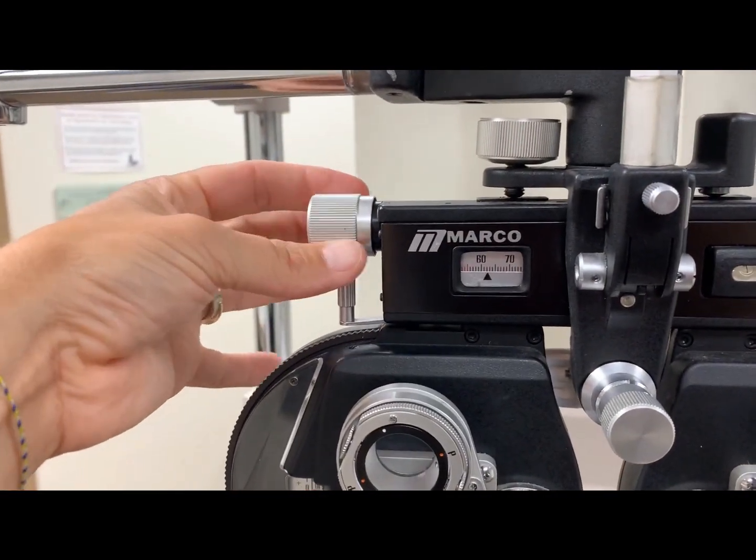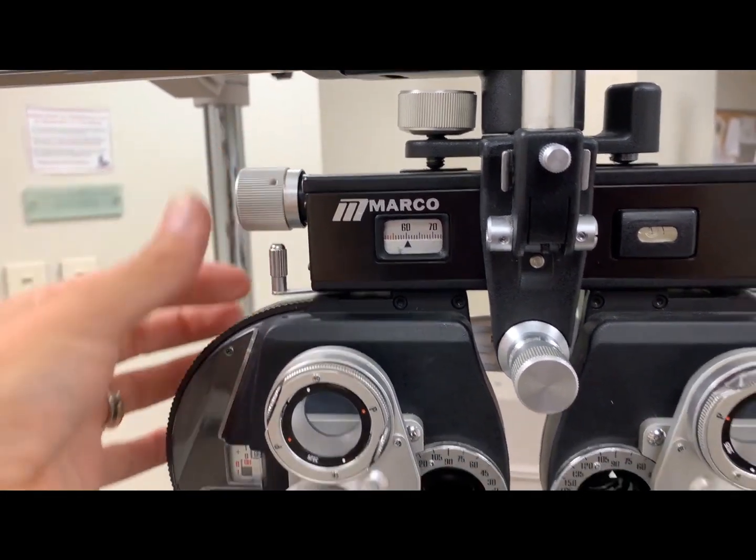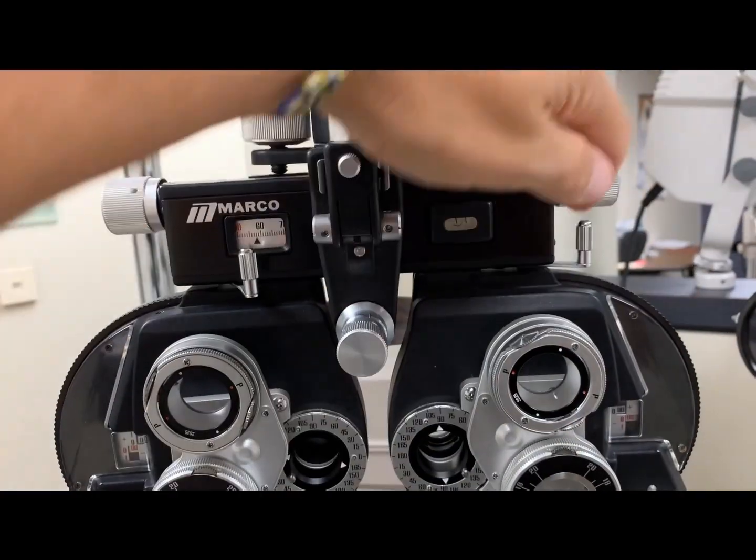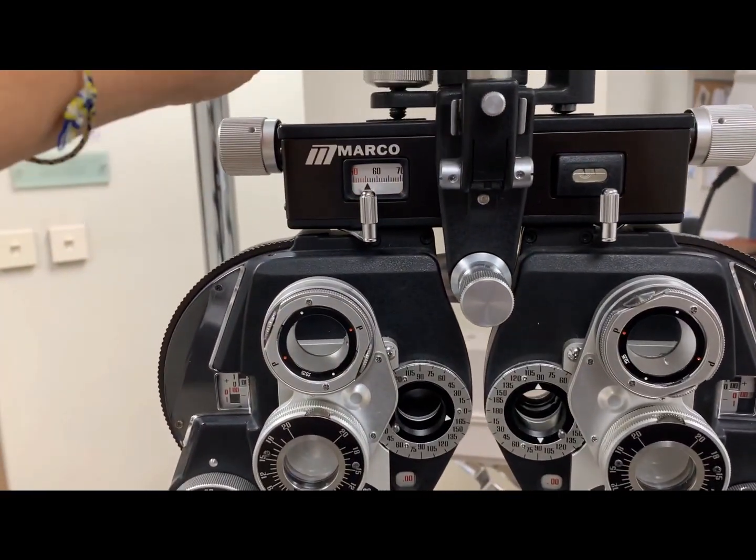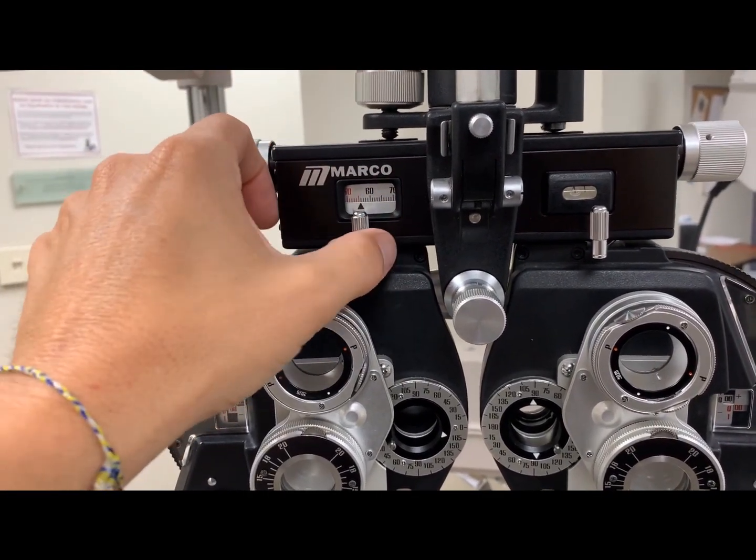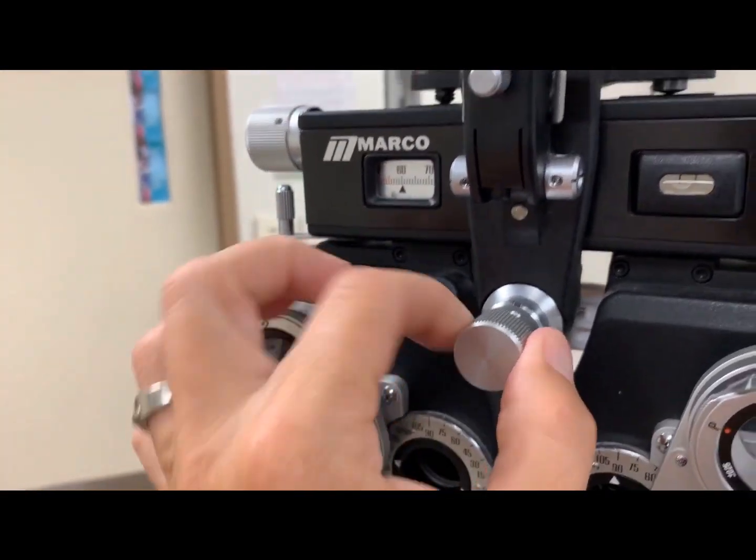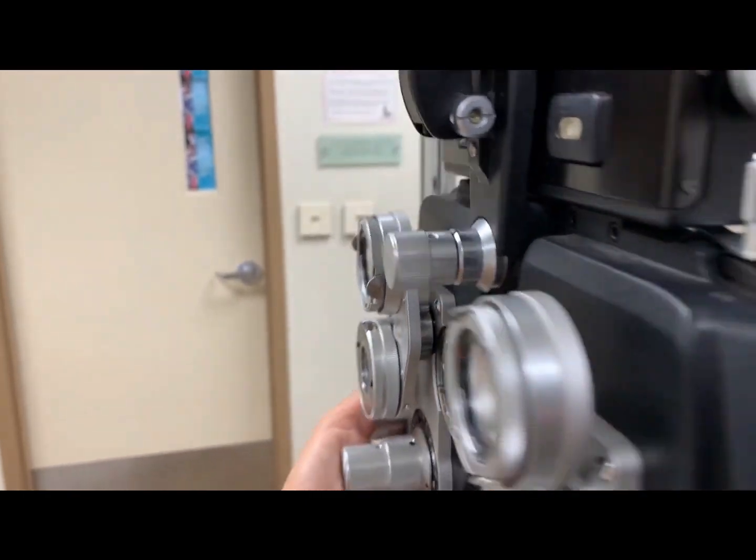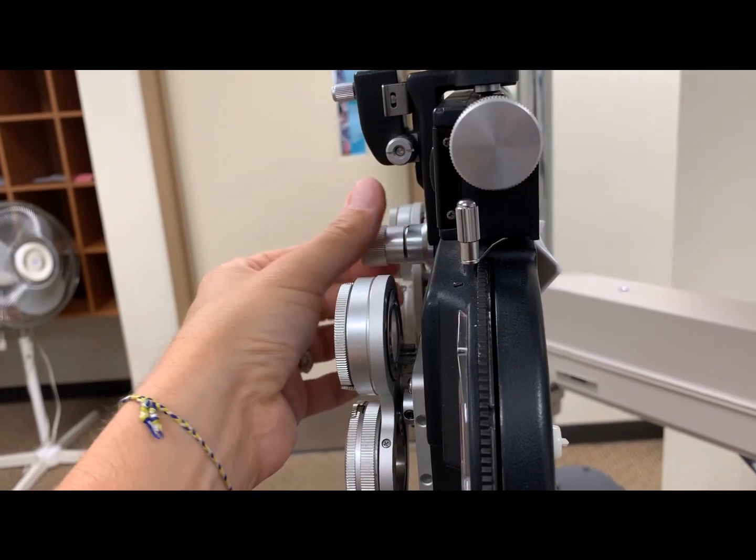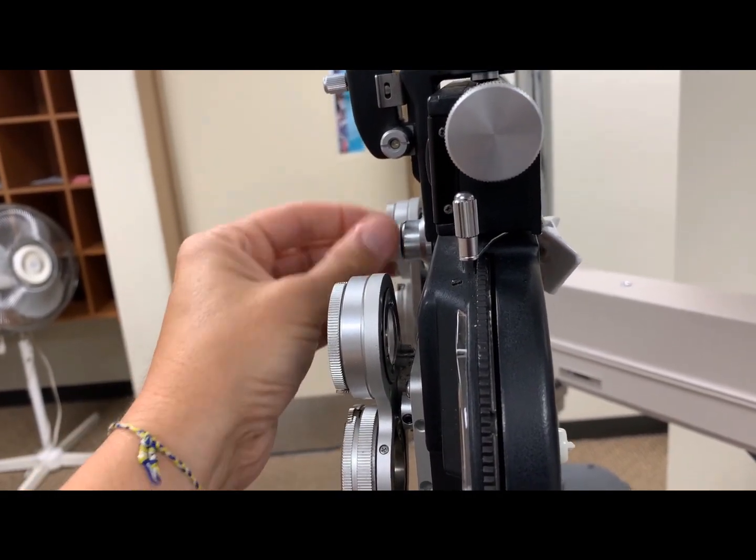This knob will change and adjust your PD. Typically, the PD will be set at distance to begin with, and then as you move to near, you will simply rotate these two levers inwards, which will then give you a near PD. The typical change is going to be a three millimeter adjustment from distance to near as you rotate these levers. This knob is going to simply change where the patient's forehead rest is, moving it out, pushing the patient further away, or bringing the patient closer.